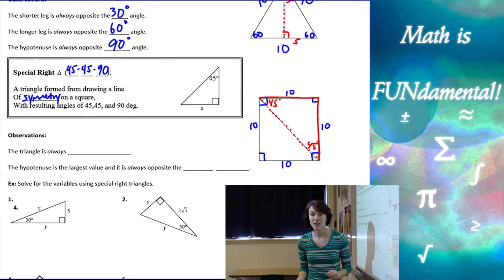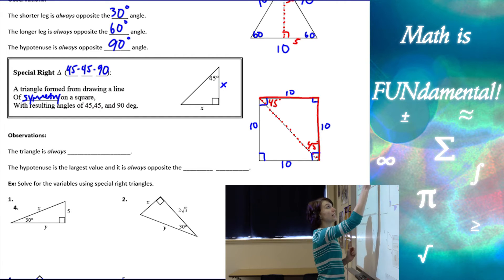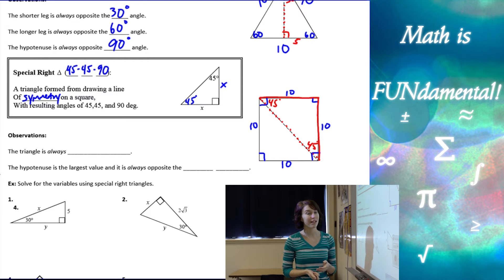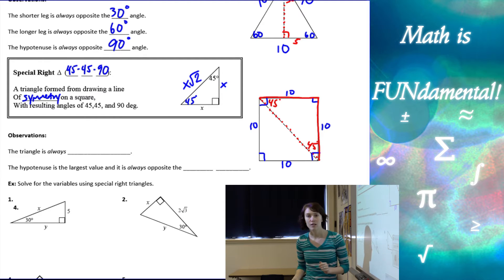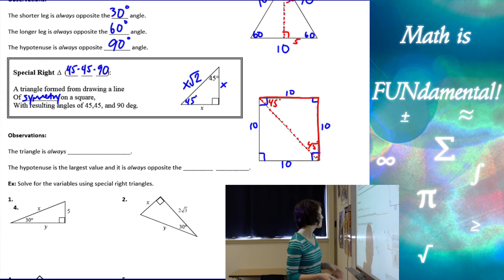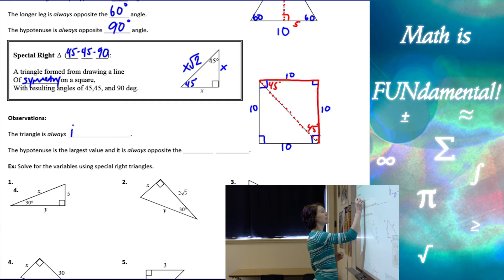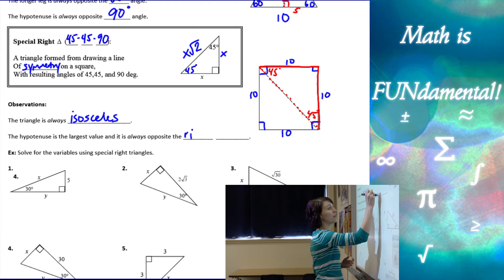In our 45-45-90 triangle, if one of our legs is x, the other leg is also x, because we've got an isosceles triangle — it was part of a square, so those legs didn't change. We could use the Pythagorean theorem to find the hypotenuse, but the shortcut is that the hypotenuse of a 45-45-90 triangle is always x times the square root of 2. The triangle is always isosceles, and the hypotenuse is the largest value, always opposite the right angle.